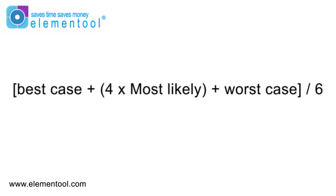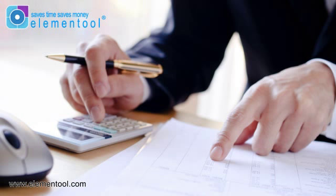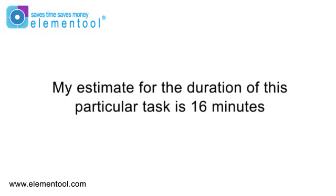Now I take the formula, which is best case plus 4 times most likely plus worst case, and divide by 6. I plug those numbers in: 8 plus 4 times 15 plus 28, divided by 6. Then I get at my calculator — or, if I'm feeling up to it, I just do the math in my head. My result is 16, and that's my estimate for the duration of this particular task.